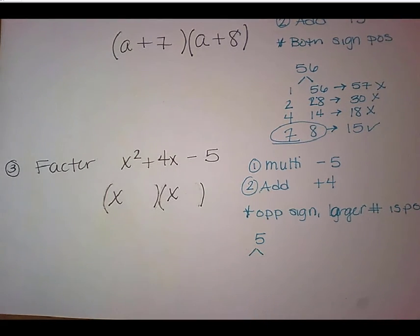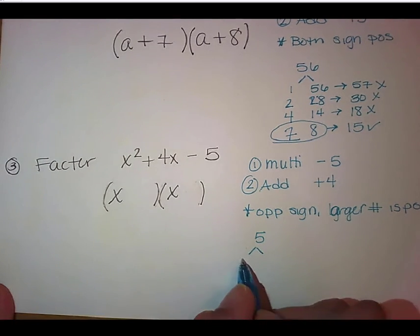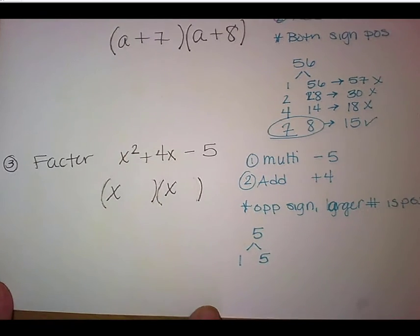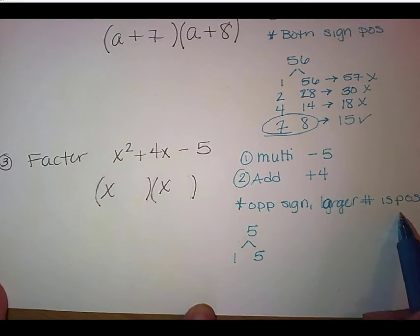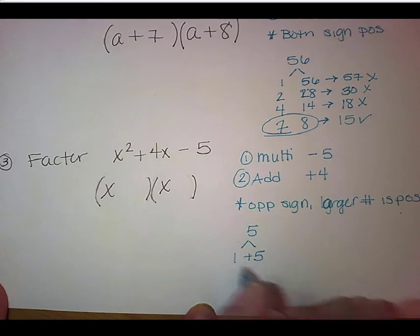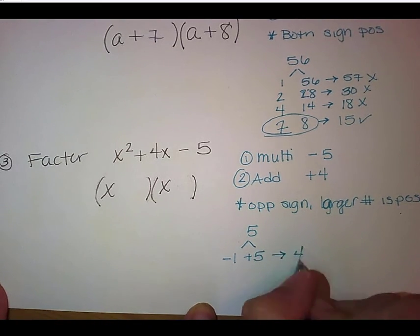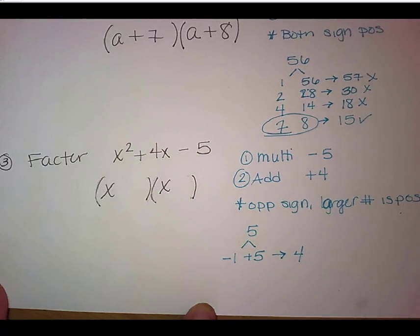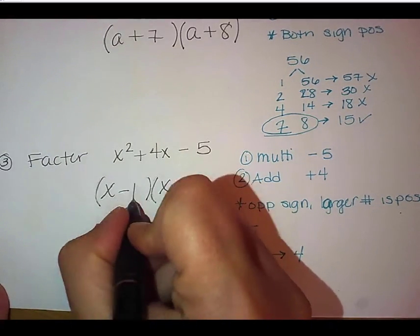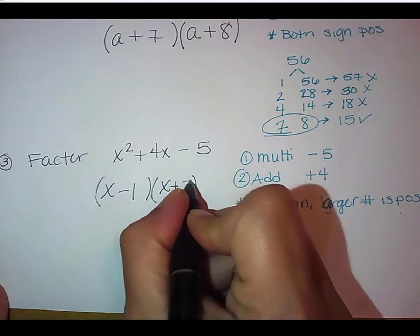Okay? So now we're going to start looking for our factors. Now, the really awesome thing about working with numbers like 5, it's a prime number, which means it's only divisible by 1 and itself, which means it only has one set of factors, and that is 1 times 5. Remember that our larger number is our positive. So we're going to have a positive 5 and a negative 1. That does indeed give us a positive 4. So here we would have x minus 1 and x plus 5.